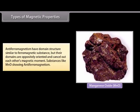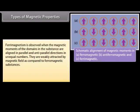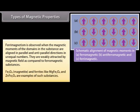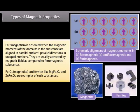Antiferromagnetism: These substances have a domain structure similar to ferromagnetic substances, but their domains are oppositely oriented and cancel out each other's magnetic moments. MnO is an example. Ferrimagnetism is observed when the magnetic moments of the domains in the substance are aligned in parallel and anti-parallel directions in unequal numbers. They are weakly attracted by a magnetic field compared to ferromagnetic substances. Fe₃O₄ (magnetite) and ferrites like MgFe₂O₄ and ZnFe₂O₄ are examples.